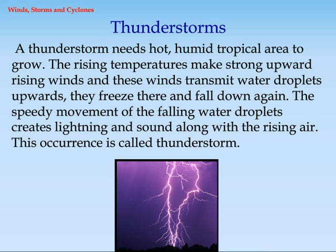Thunderstorms. The thunderstorm needs a hot, humid tropical area to grow. The rising temperatures make strong upward rising winds, and these winds transmit water droplets upwards, where they freeze and fall down again. The speedy movement of the falling water droplets creates lightning and sound along with the rising air. This occurrence is called a thunderstorm.